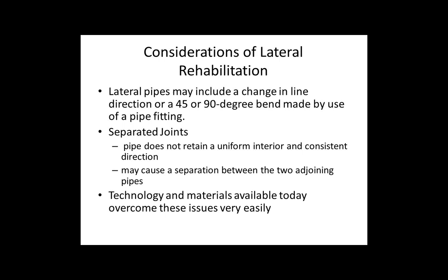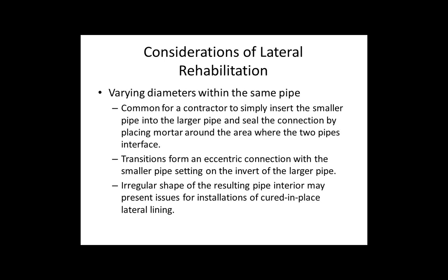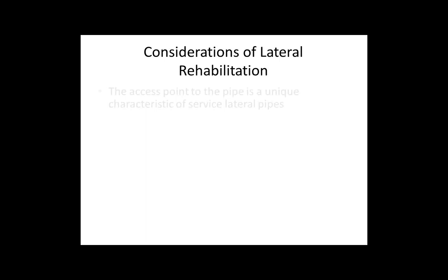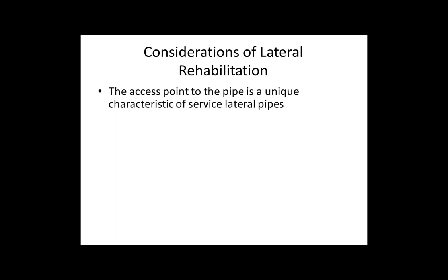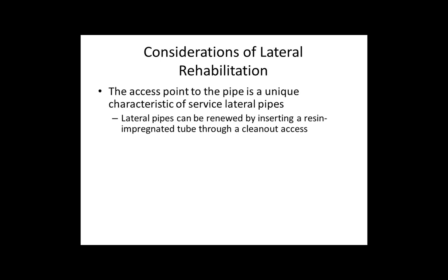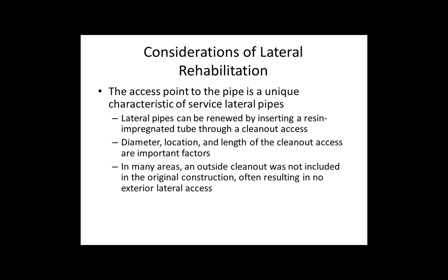Varying diameters within the same pipe present a common challenge. A contractor may simply insert a smaller diameter pipe into a larger pipe and try to seal the connection with mortar. The transition forms an eccentric connection where the smaller pipe ends up sitting on the invert of the larger pipe, presenting issues during rehabilitation. Also, access to a lateral pipe is a unique characteristic — unlike mainlines accessible through manholes. Technology today allows renewal of lateral pipes by inserting a resin-impregnated tube through a clean-out; however, the diameter, location, and length of the clean-out are very important. We strongly recommend a lateral access point be created before rehabilitation work is undertaken.